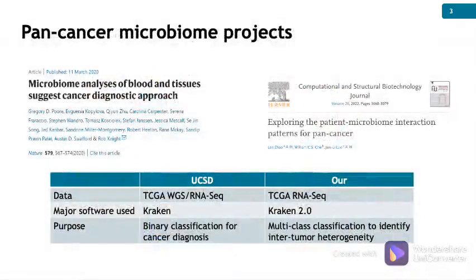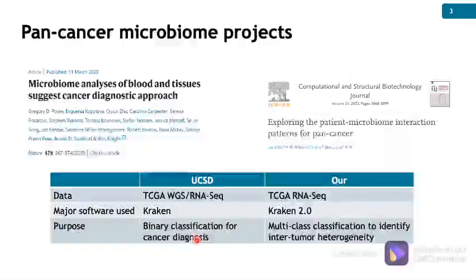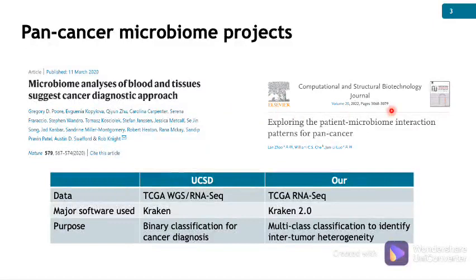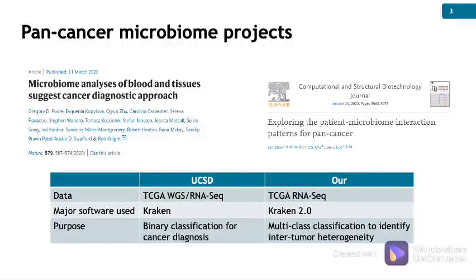Next are the two pan-cancer microbiome projects. University of California, San Diego published a paper in Nature. They identified microbial signatures for cancer diagnosis. However, the signatures were at the genus level and they didn't investigate intratumoral microbial heterogeneity. In order to fill this gap and identify species-level signatures, we carried out a pan-cancer microbiome project and reported the general pipeline included in our analysis. We then applied similar approaches to investigate the rat inter-tissue microbial heterogeneity.